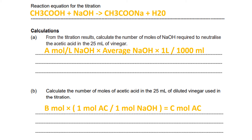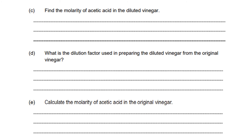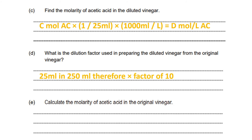Next, find the moles of acetic acid in the diluted vinegar: take the number of moles of acetic acid, multiply by 1 over 25 ml, then multiply by 1000 ml per litre, giving you the moles of acetic acid per litre in the diluted vinegar. The dilution factor used in preparing the diluted vinegar from the original vinegar: we used 25 ml in 250 ml, therefore the dilution factor is 10.